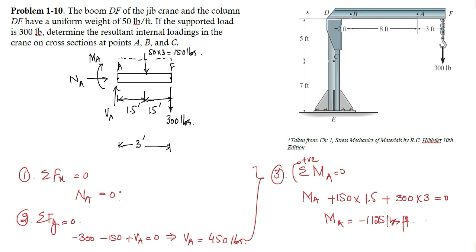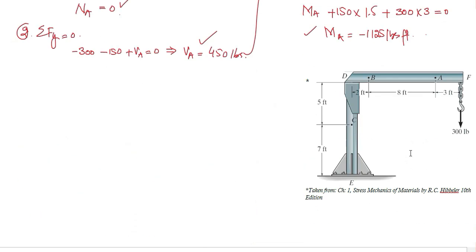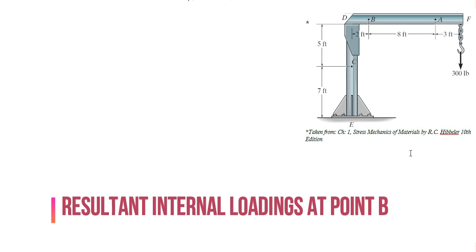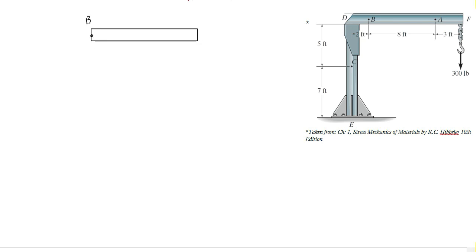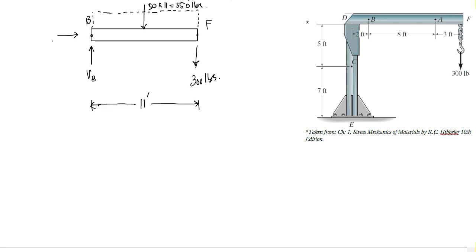Now we have the resultant internal loadings at point A. Let's move on to determine the resultant internal loadings at point B. Applying the same procedure — cutting the member at point B, taking the right portion, and drawing the free body diagram — we will calculate NB, VB, and MB by applying the conditions of equilibrium.